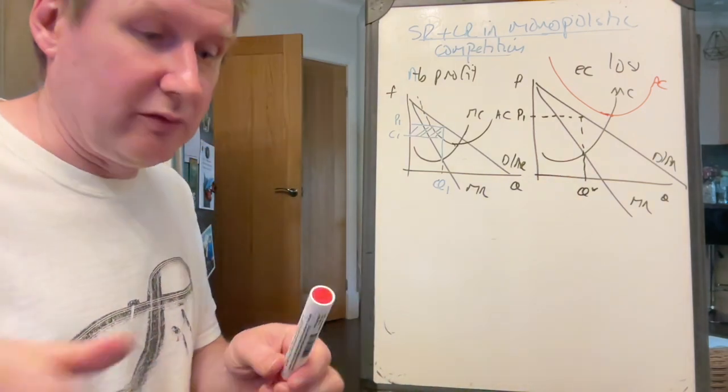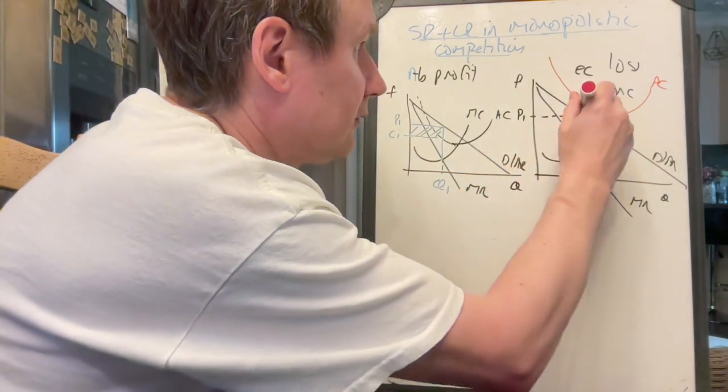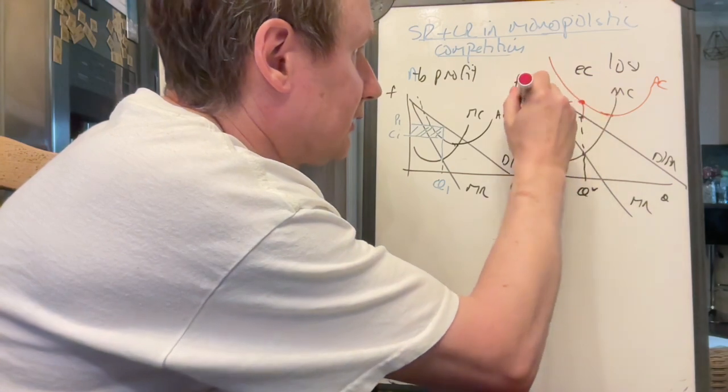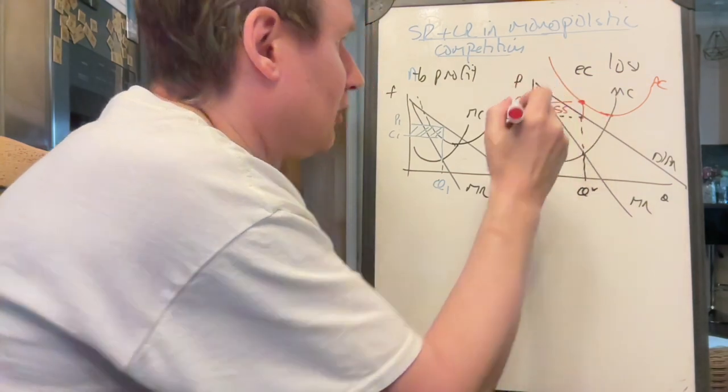And then at the same output, Q star, we then find the average cost, which is there, which is C1, and therefore this firm is making a loss.